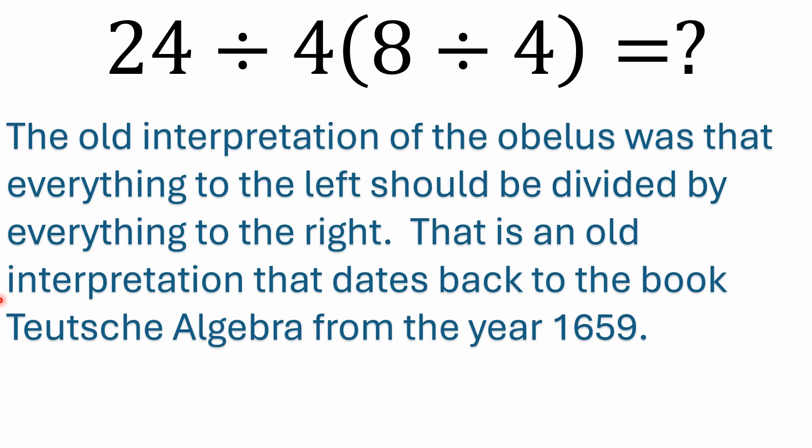The old interpretation of the obelus also, and this goes all the way back to the book Teutsche Algebra, I think in the year 1659, a Swiss mathematician. The old interpretation of the obelus was that everything to the left should be divided by everything to the right. That's an old interpretation. And it's really today with the obelus and you also have the solidus, which would be like your forward slash. Those are two division symbols that do not have grouping properties. By the way they're looked at today, they do not have grouping properties.